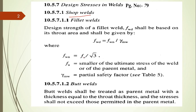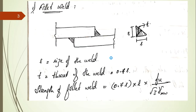Gamma WN equals FU divided by root 3, where FU is the ultimate tensile strength of the weld or the parent material, whichever is the smaller one. For butt welds, the butt shall be treated as the parent material with a throat thickness equal to the plate thickness, whichever is least. The stresses shall not exceed that permitted in the parent material. These are the criteria for strength.